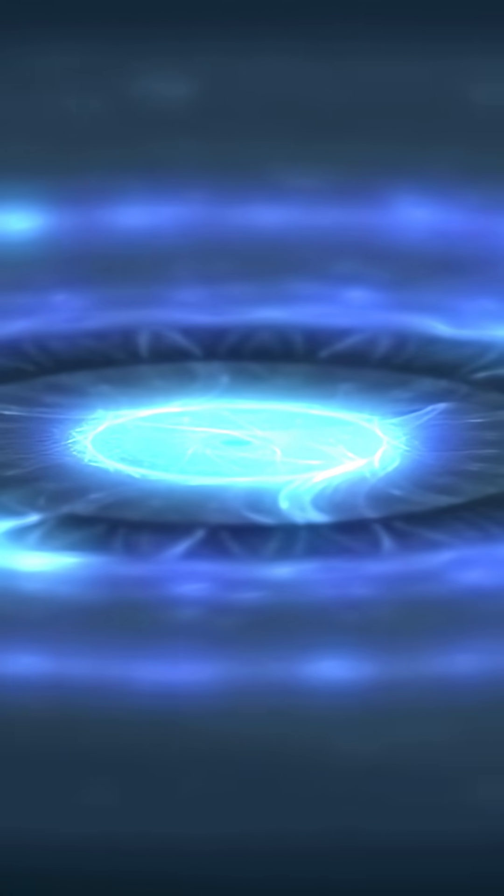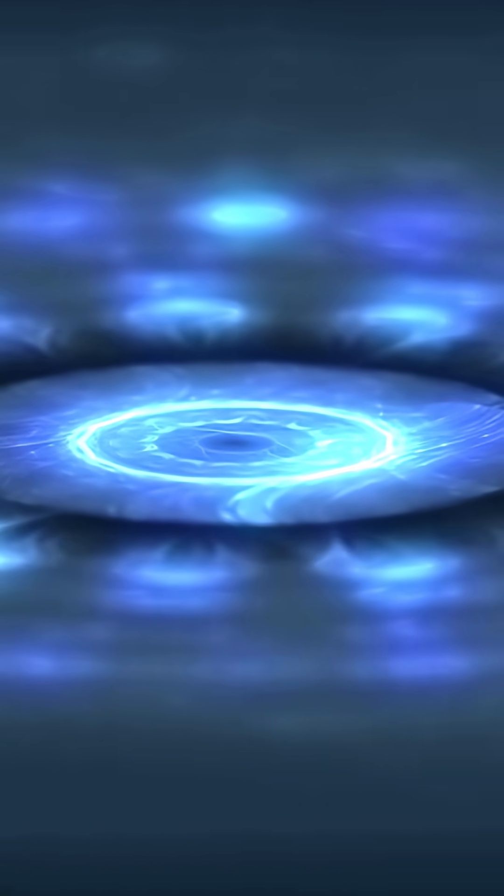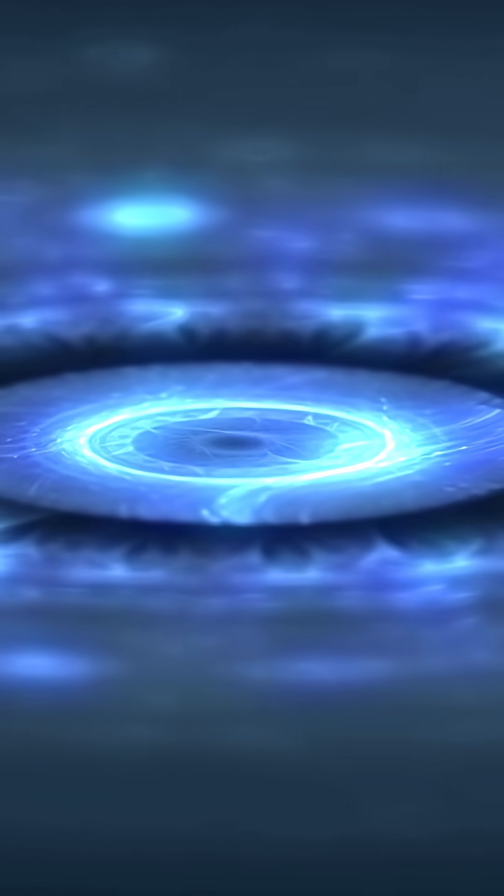Much of the Great Attractor lies behind the plane of the Milky Way, making it difficult to observe directly due to the dense concentration of stars, dust, and gas that obstruct our view.